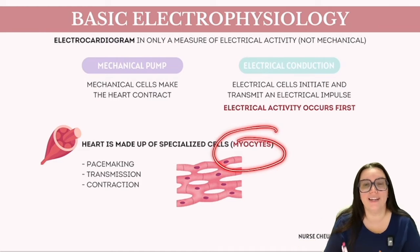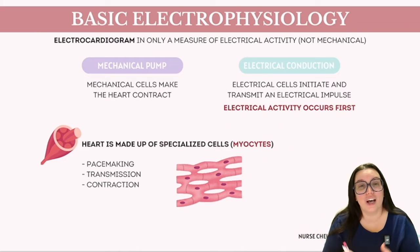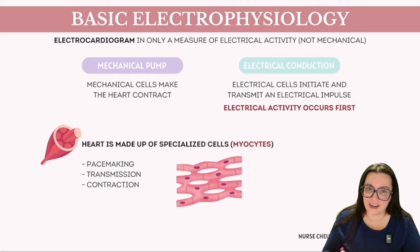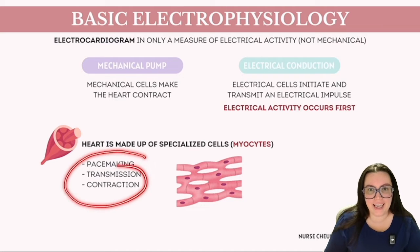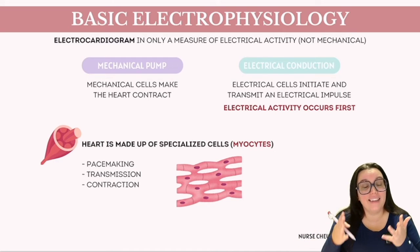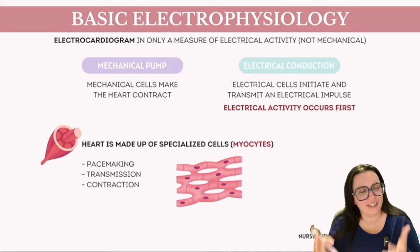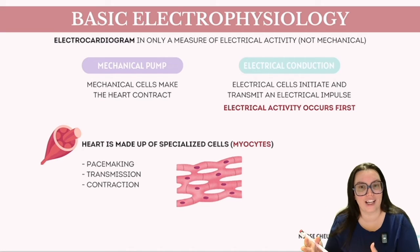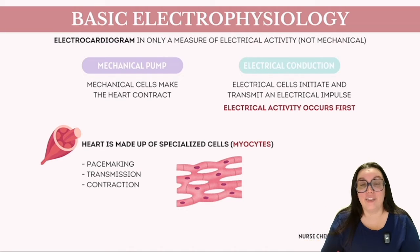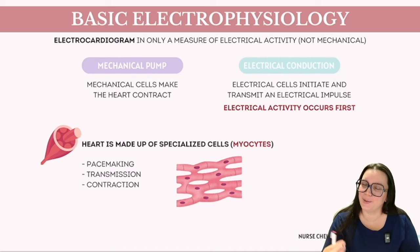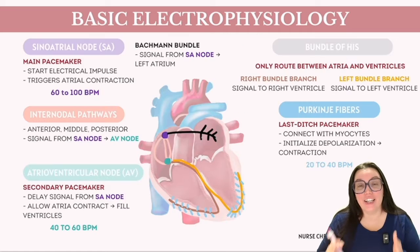Our heart consists of specialized cells known as myocytes, which come in various types. The primary ones we're interested in are those responsible for pacemaking, signal transmission, and contraction. These cells and the system they form play a critical role in generating electrical impulses that lead to the contraction of cardiac muscle cells, guaranteeing that activation signals are delivered to all parts of the heart within a suitable time frame.